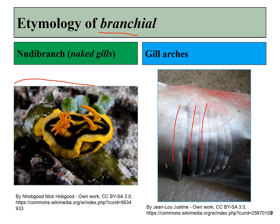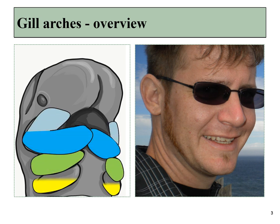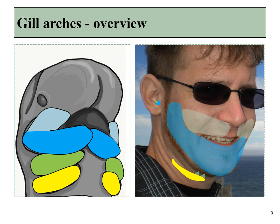Some of our ancient fishy ancestors, as they migrated onto land, no longer needed these gill arches, and instead they turned into other structures. However, during development, we still make these primitive gill arches, called the branchial arches or the pharyngeal arches. Later, these will grow and turn into other structures in the adult, including bones and cartilages, nerves, muscles, and a few other tissues.